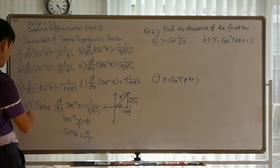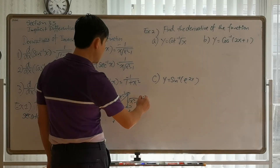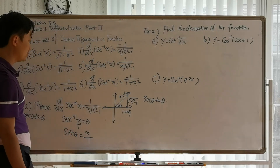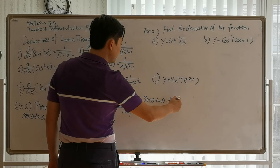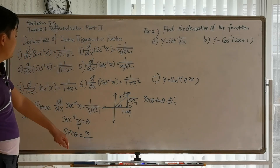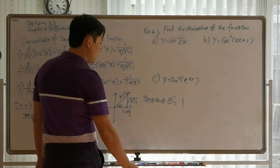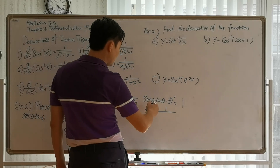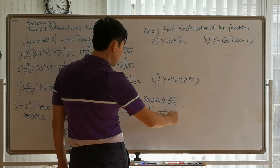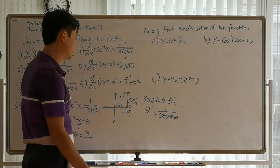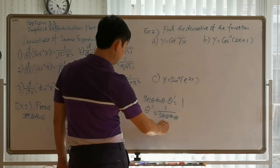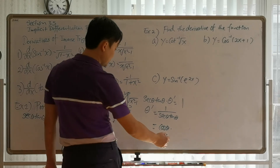Now we take the derivative implicitly. Starting from secant(theta) = x, the derivative of secant is secant times tangent, so we get secant(theta) times tangent(theta) times theta-prime equals 1. Solving for theta-prime, we divide both sides by secant(theta) times tangent(theta), giving theta-prime equals 1 over secant(theta) times tangent(theta).